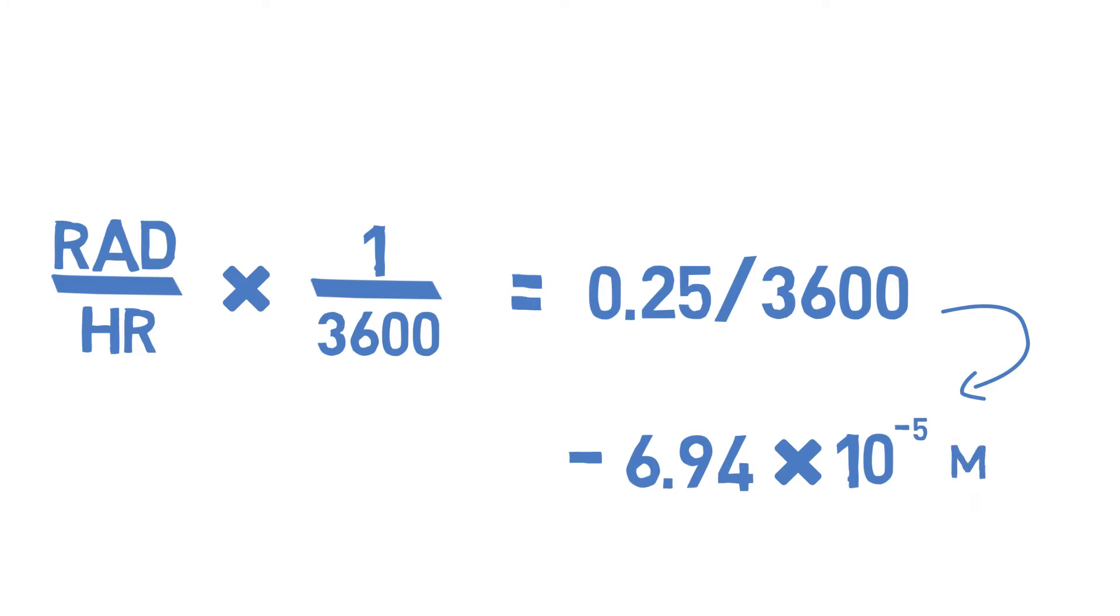Now we convert radians per hour into radians per second by multiplying 0.25 radians per hour by 1 over 3600, which solves as 6.9 times 10 to the power of negative 5 radians per second.